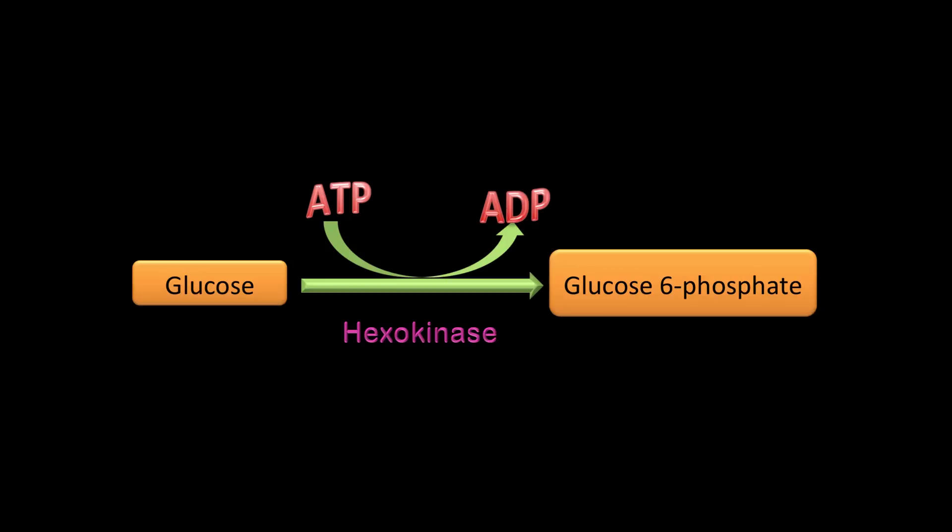Why is it important to convert glucose to glucose-6-phosphate? There are two reasons. First, by adding phosphate to glucose you essentially trap glucose in the cell — glucose is free to enter or leave, but glucose-6-phosphate has no transporters and remains in the cell. Second, adding a phosphate group activates the molecule and makes the reactions occur.